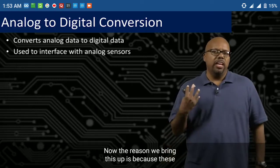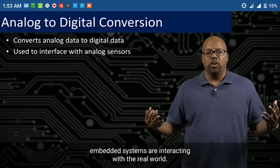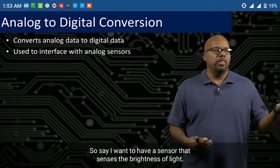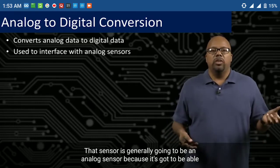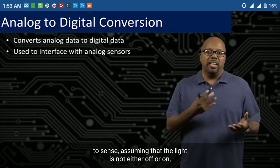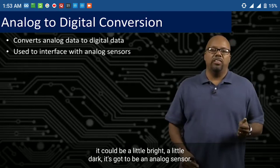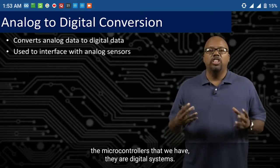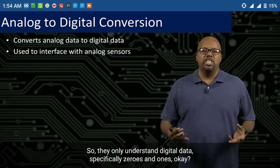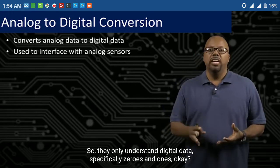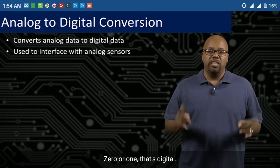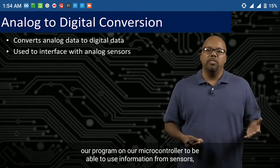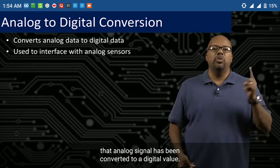The reason we bring this up is because these embedded systems are interacting with the real world, and the real world, to our perceptions, is largely analog. Say I want a sensor that senses the brightness of light — that sensor is generally going to be an analog sensor, because the light could be a little bright or a little dark; it's got to be an analog sensor. The problem is that our microcontrollers are digital systems. They only understand digital data, specifically zeros and ones — binary data.